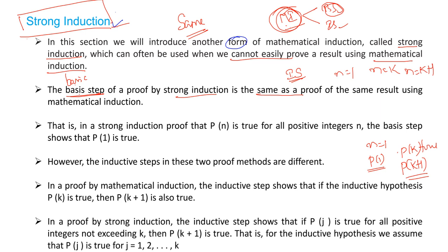But in Strong Induction, in the Inductive Step, we assume that P(N) is true for all positive integers — that means P(1) is true, P(2) is true, P(3) is true, P(4) is true, and so on. For all positive integers, P(N) should be true in the Inductive Step. That is the key difference between Mathematical Induction and Strong Induction.